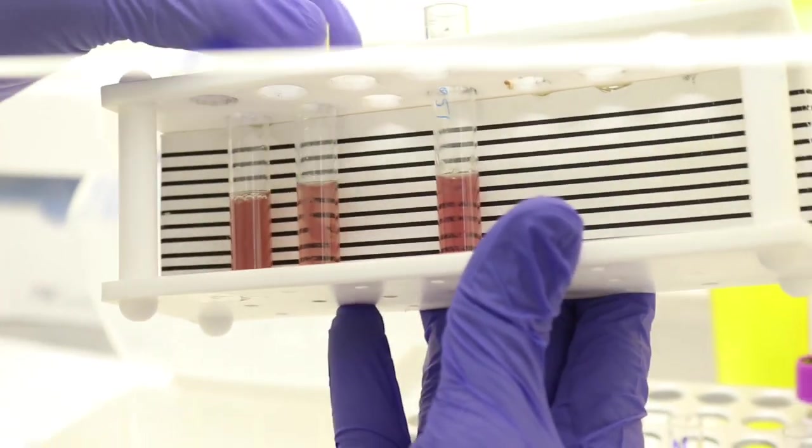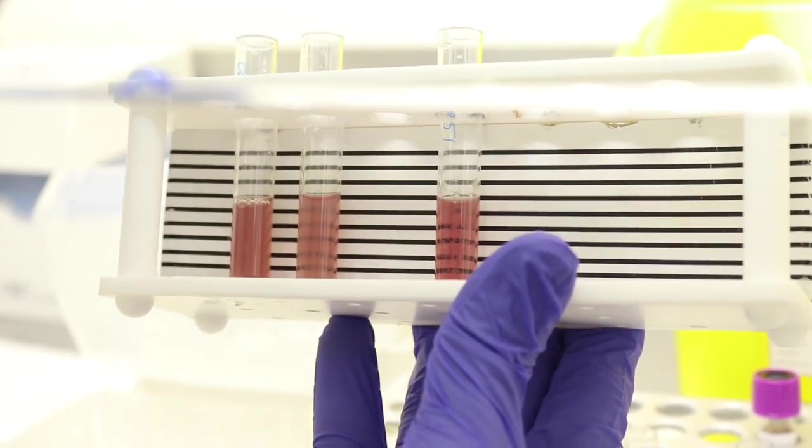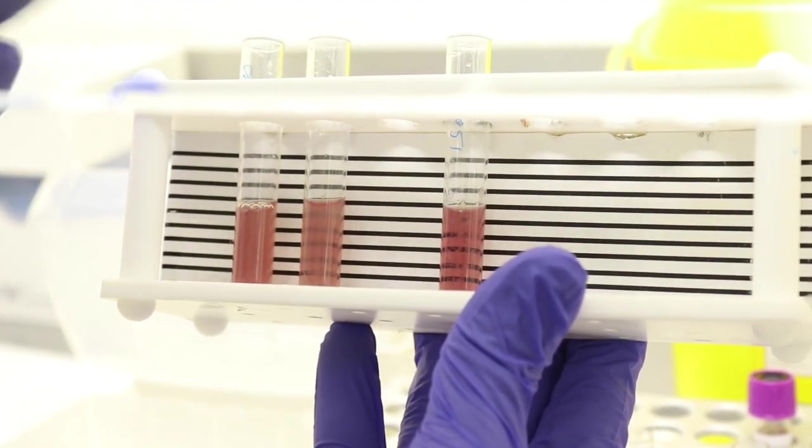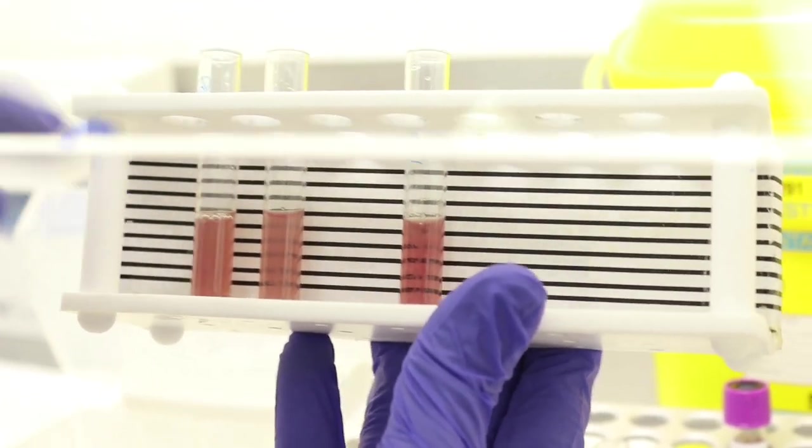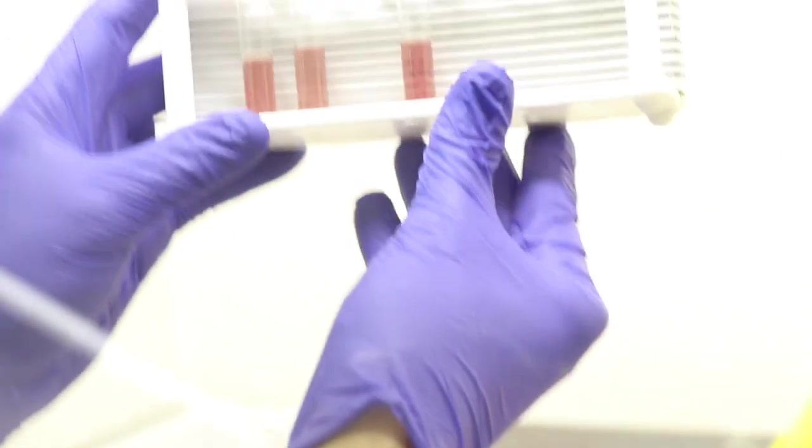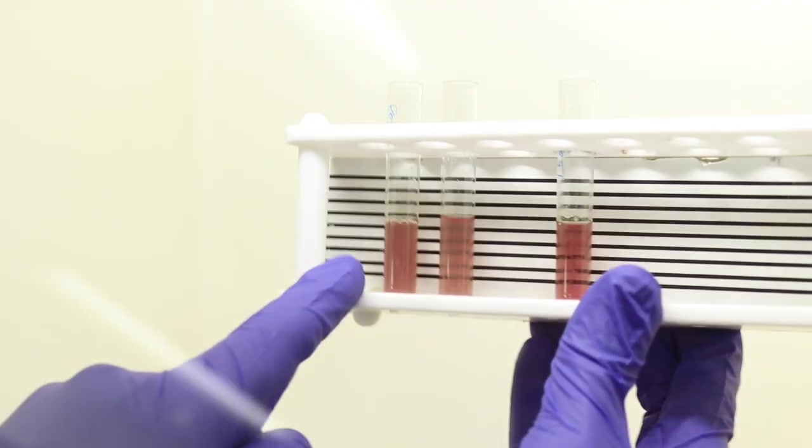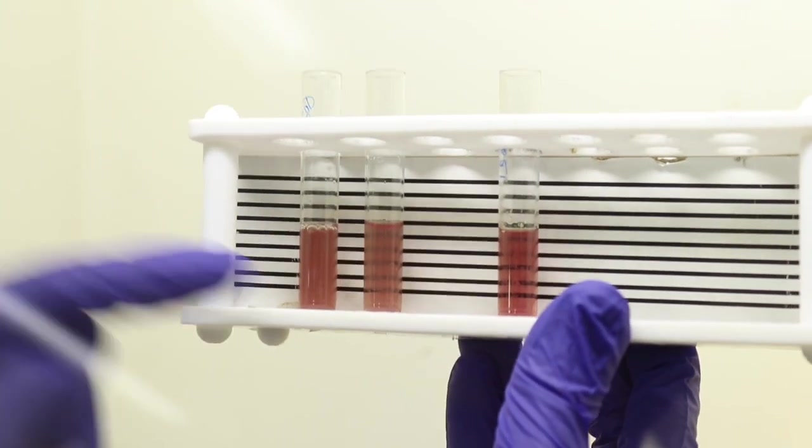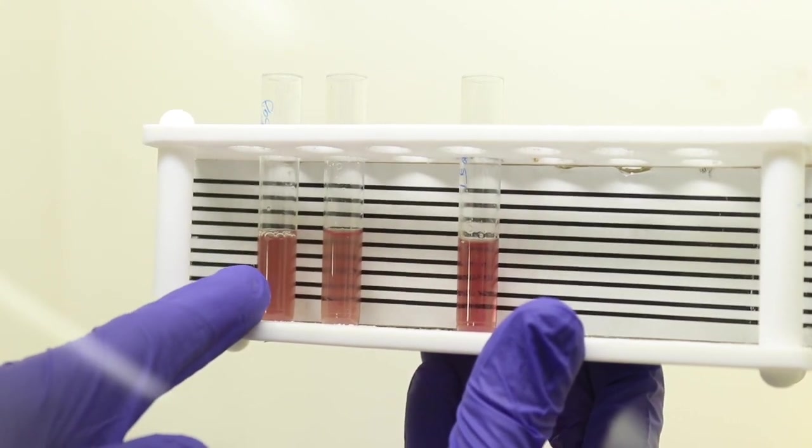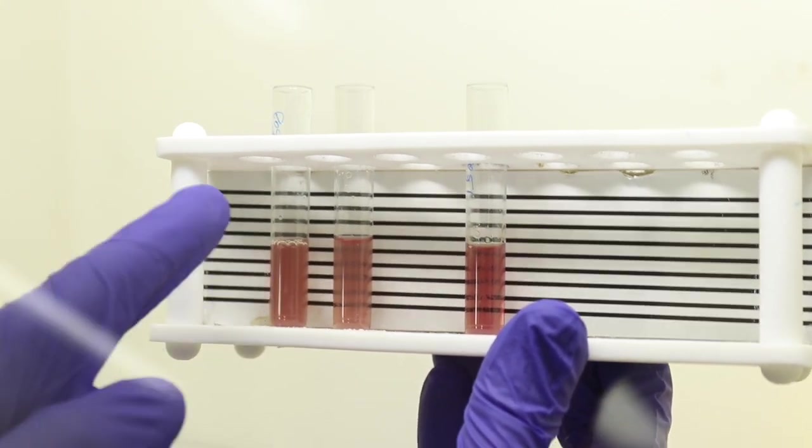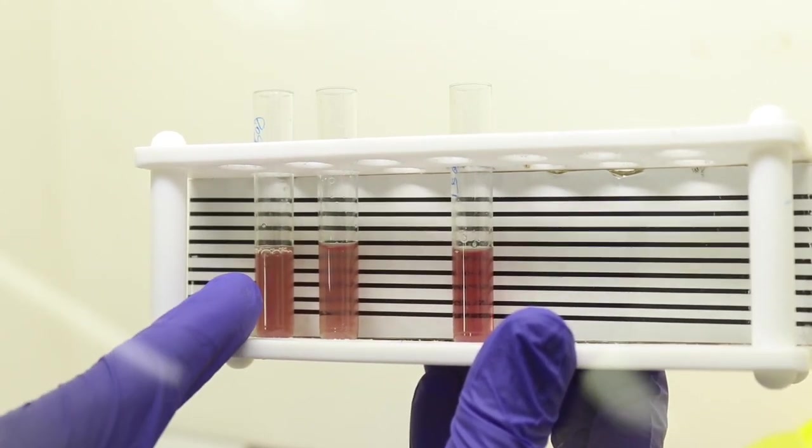If it's negative, that means all hemoglobins are dissolved and you don't have abnormal hemoglobin S in the sample. This is the positive control. You really cannot see the black lines through your tube, which means there is a presence of abnormal hemoglobin S.